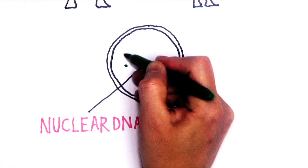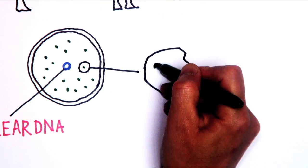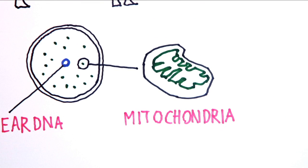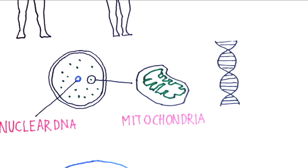Also in your cells are tiny clusters of mitochondria, which have their own smaller collection of DNA.